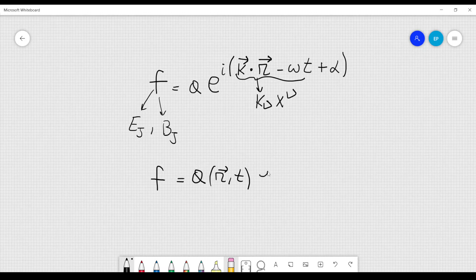And then we multiply by a complex exponential e to the i. And instead of this expression here, we have the so-called iconal, and usually it is denoted by psi, psi of r, t, like this.